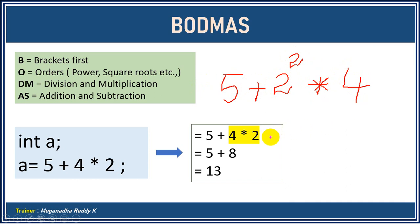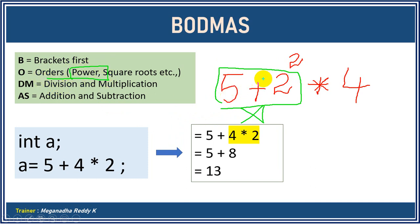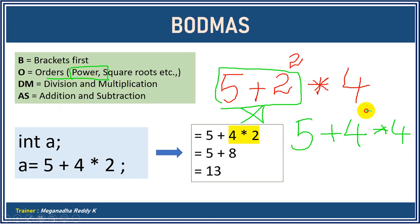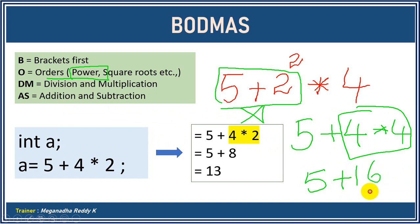In this case I should not add 5 + 2 first. As per BODMAS, first preference is given to Orders, meaning the power. So 2² becomes 4, giving us 5 + 4 * 4. Next, multiplication is evaluated: 4 * 4 = 16. Then finally addition: 5 + 16 = 21.